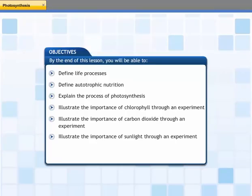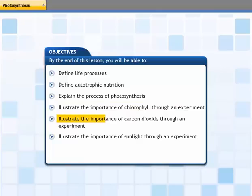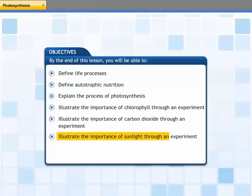This lesson explains how plants manufacture food through photosynthesis. By the end of this lesson, you will be able to: define life processes, define autotrophic nutrition, explain the process of photosynthesis, illustrate the importance of chlorophyll through an experiment, illustrate the importance of carbon dioxide through an experiment, and illustrate the importance of sunlight through an experiment.